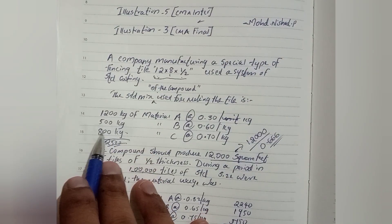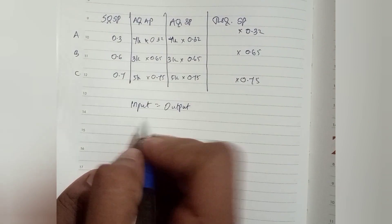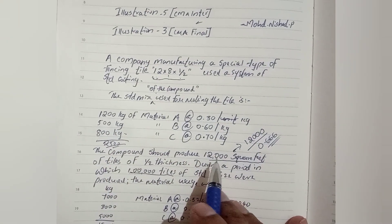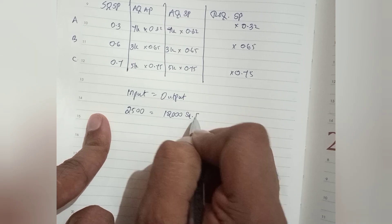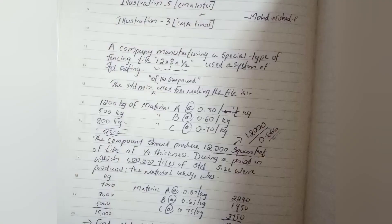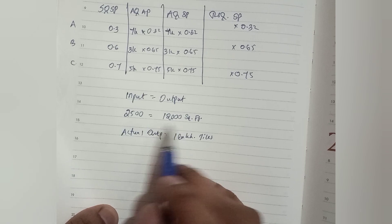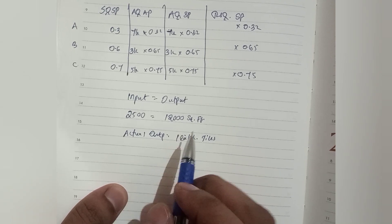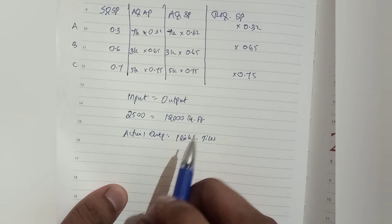Input: A is 50 kg, B is 100 kg, C is given. Total input is 250 kg. The actual output is 1 lakh tiles. We need to convert this number of tiles.